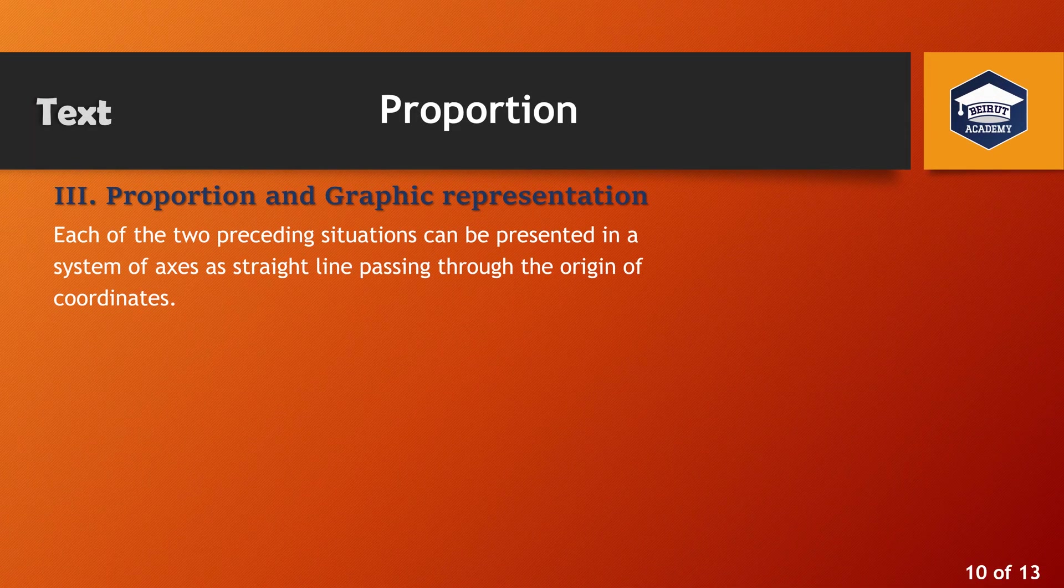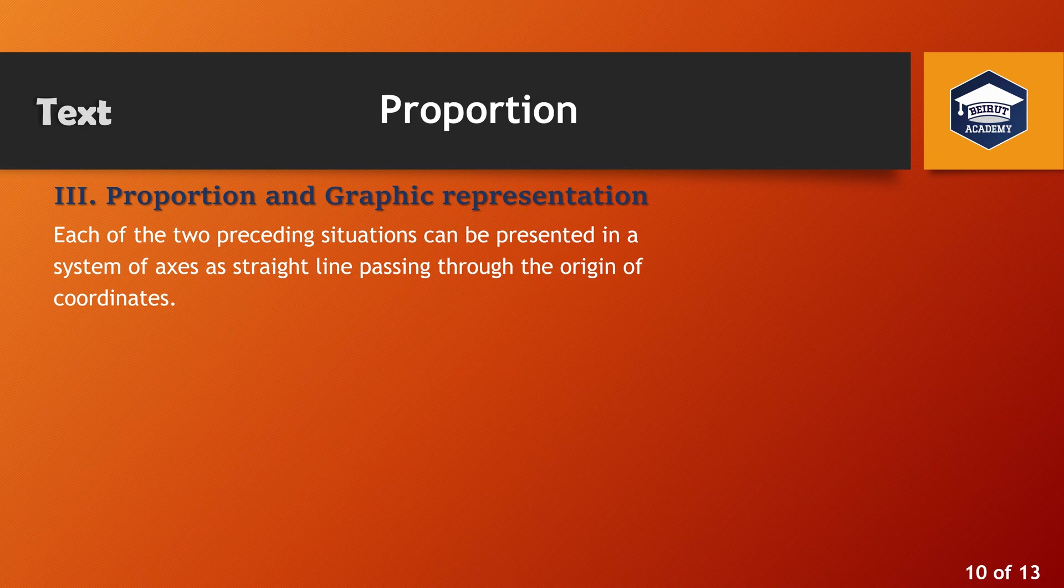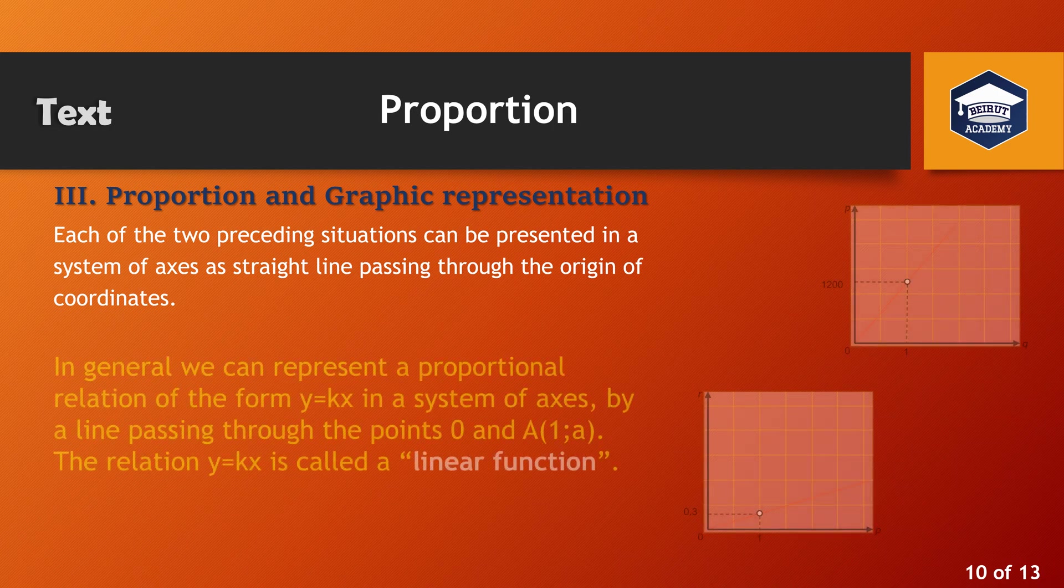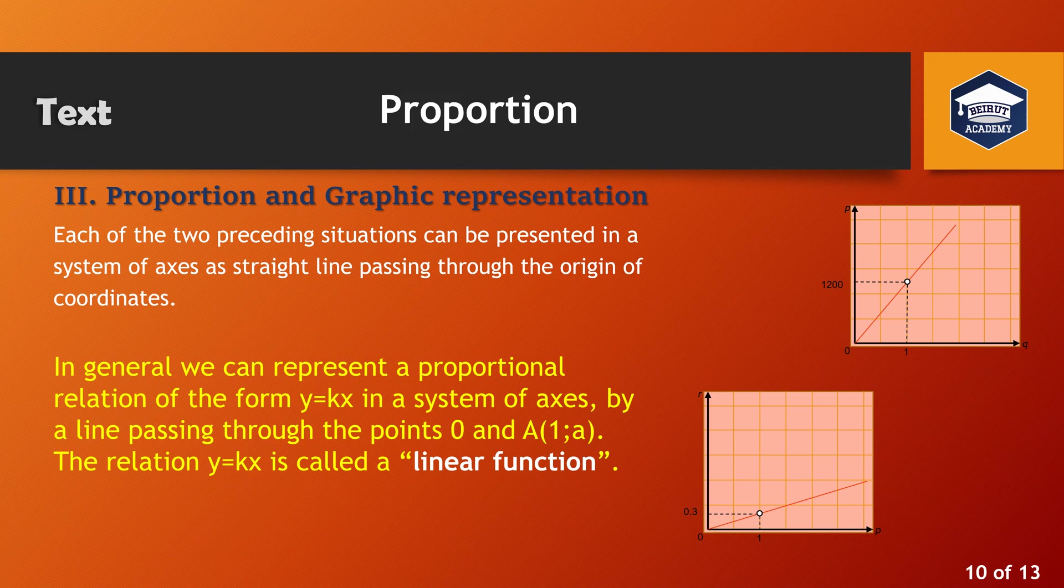Each of the two preceding situations can be presented in a system of axes as a straight line passing through the origin of coordinates. In general, we can represent a proportional relation of the form y equals kx in a system of axes by a line passing through the points 0 and A. The relation y equals kx is called a linear function.